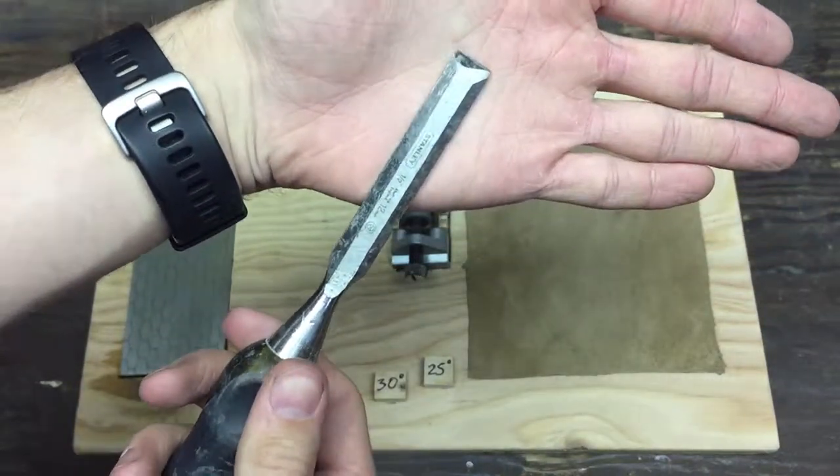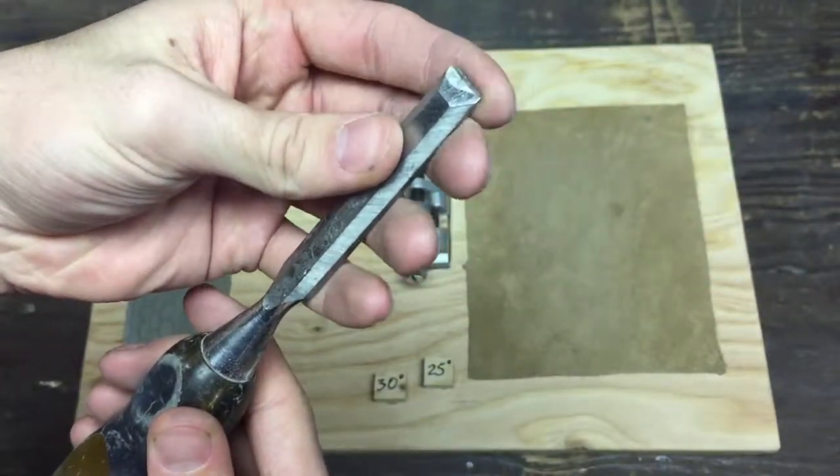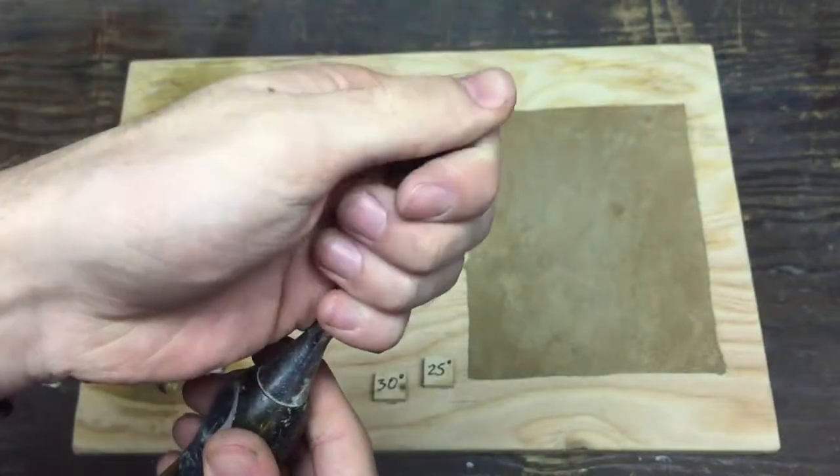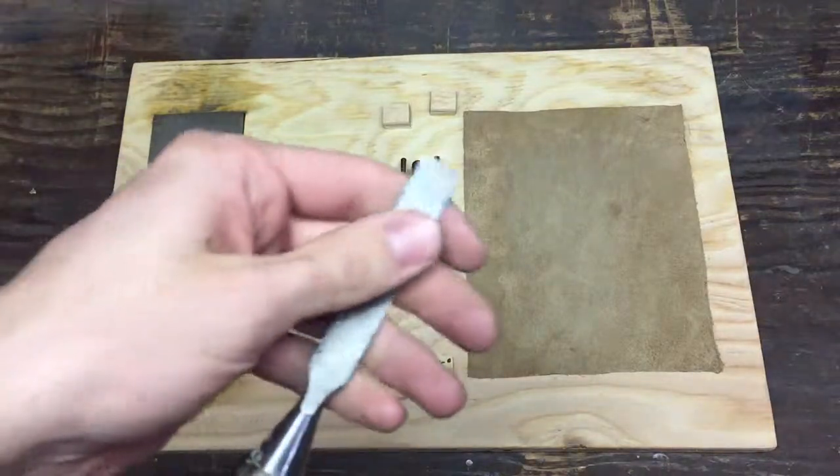So here's the chisel I want to sharpen. It's really dull. My dad used it on concrete so it won't even cut wood anymore. I've tried it and it's just squishing the grain together.